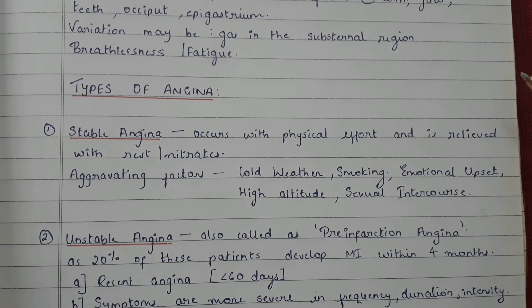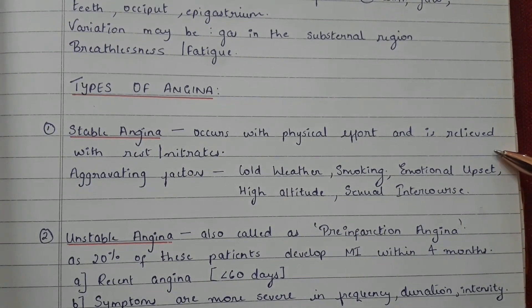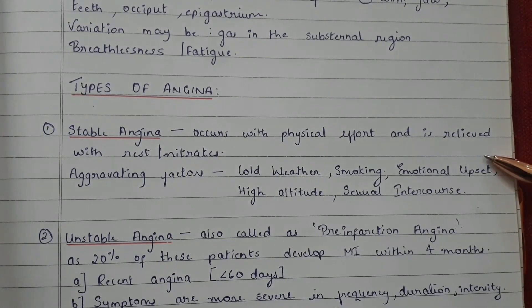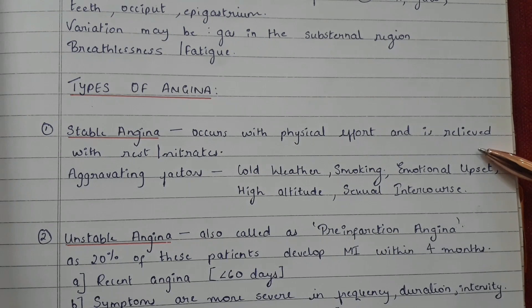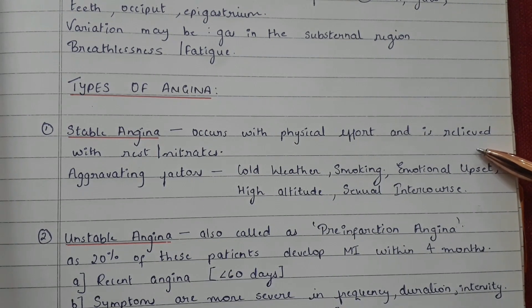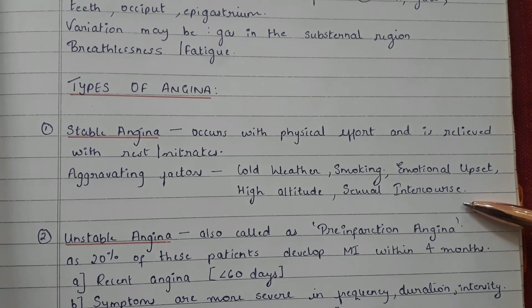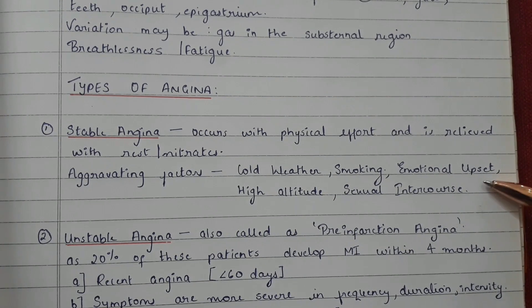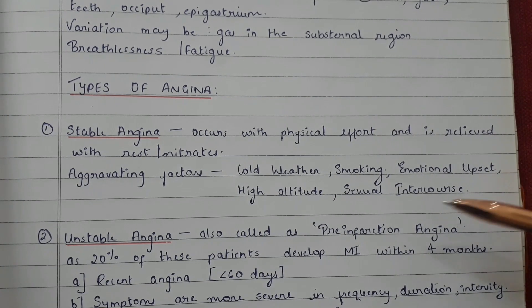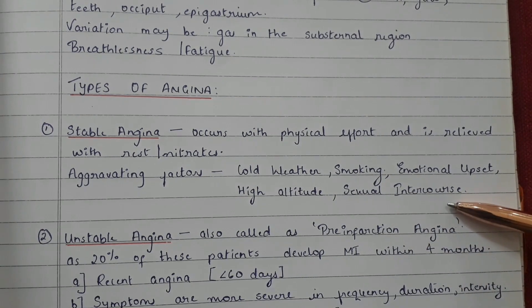The first type is stable angina. This occurs with physical effort and is relieved with rest or nitrates. Aggravating factors include cold weather, smoking, emotional upset, high altitude, and sexual intercourse.